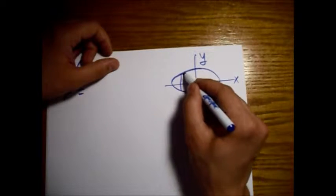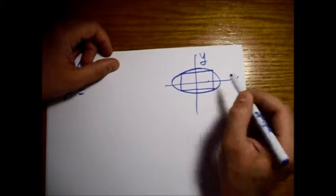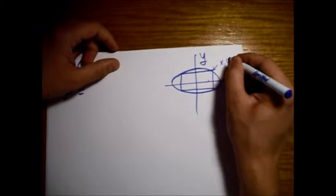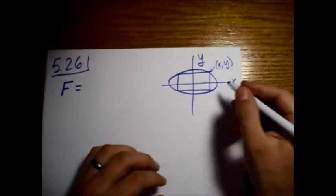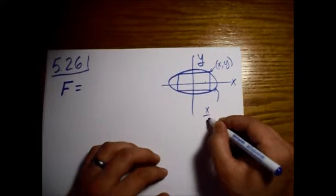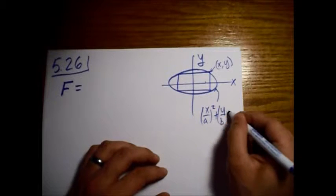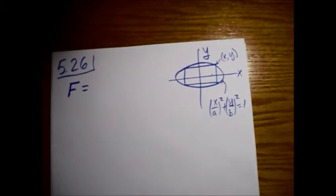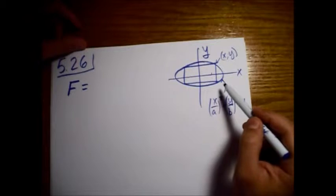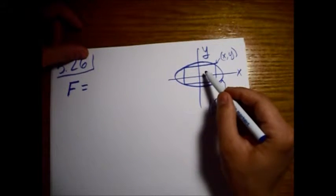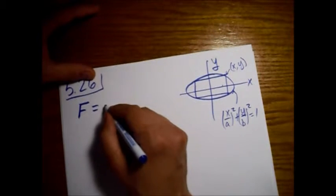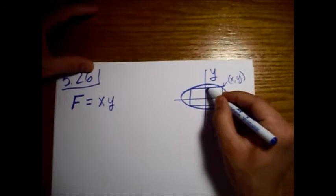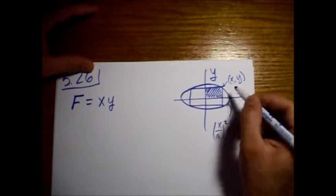We are drawing a rectangle inscribed in the ellipse. This is the point (x, y). This ellipse is (x/a)² + (y/b)² = 1. We want to maximize the area. What I'm going to do is maximize x multiplied by y — that is the area of one quadrant of the rectangle.